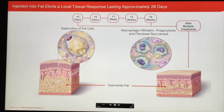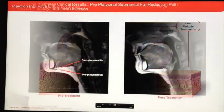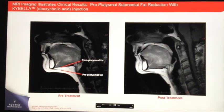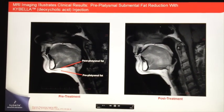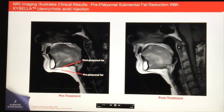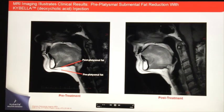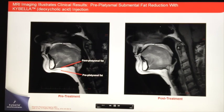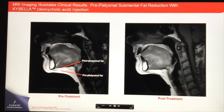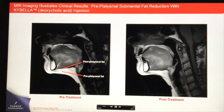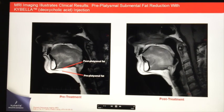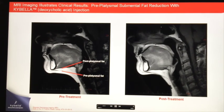Here is an MRI image that illustrates the effect of Kybella treatment clinically on a patient's preplatismal submental fat. This is a mid-sagittal section of the patient before and after Kybella treatment, showing a reduction of preplatismal submental fat. This is the target tissue for Kybella treatment.